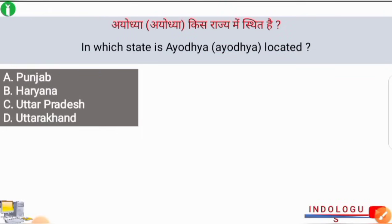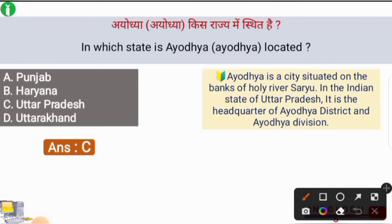In which state is Ayodhya located? The correct answer is option number C, i.e. Uttar Pradesh. Ayodhya is a city situated on the bank of the holy river Sarayu in the Indian state of Uttar Pradesh. It is the headquarters of Ayodhya district and Ayodhya division. The old name of Ayodhya was Faizabad.